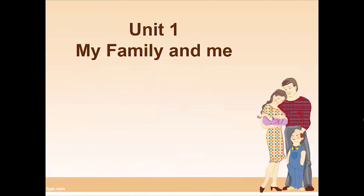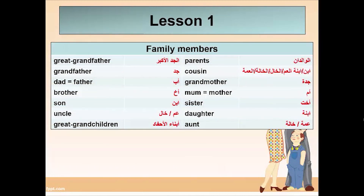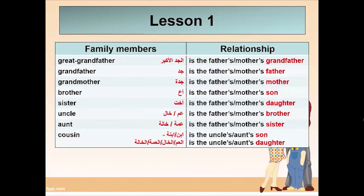Let's get started with Unit 1: My Family and Me. We'll have Lessons 1 and 2. We'll start with the new words, which are about family members: great-grandfather, grandfather, dad, father, brother, son, uncle, great-grandchildren, parents, cousin, grandmother, mom, mother, sister, daughter, aunt. Great-grandfather is the father's grandfather or the mother's grandfather. Grandfather is the father's father or the mother's father.